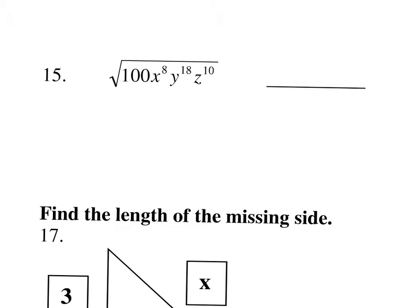The square root of 100 is 10, because 10 times 10 makes 100. For each of these variables, we divide the exponents by 2. So 8 divided by 2 is 4, 18 divided by 2 is 9, and 10 divided by 2 is 5.